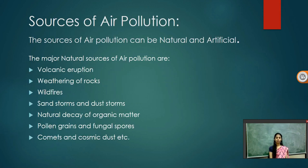The sources of air pollution can be natural and artificial. Major natural sources of air pollution are volcanic eruption, weathering of rocks, wildfires, sandstorms and dust storms, natural decay of organic matter, pollen grains and fungal spores, comets and cosmic dust, etc.